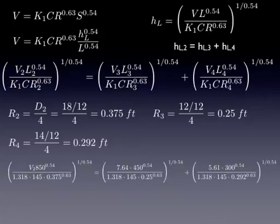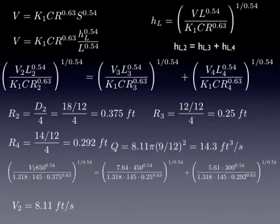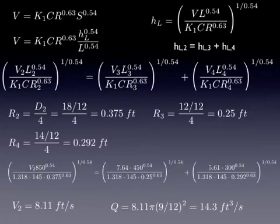So I've got V2 times the length of pipe raised to the power of 0.54 divided by my unit factor, divided by C, divided by the hydraulic radius raised to 0.63. And then I have to do the other exponent, sum that all up, and I get a velocity of 8.11. I can easily convert that to a flow rate.